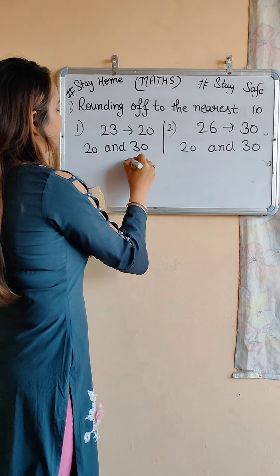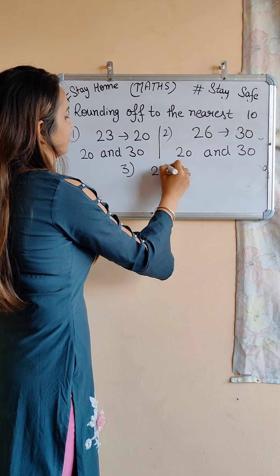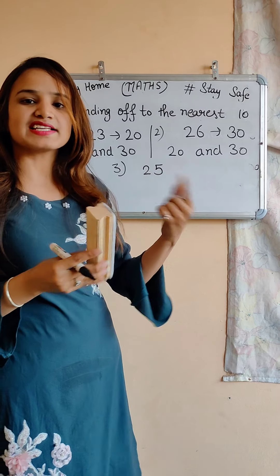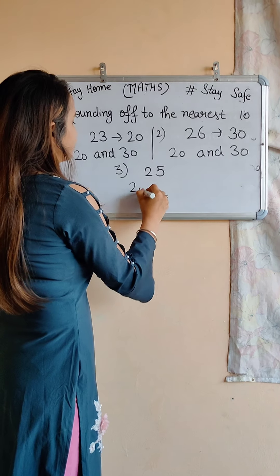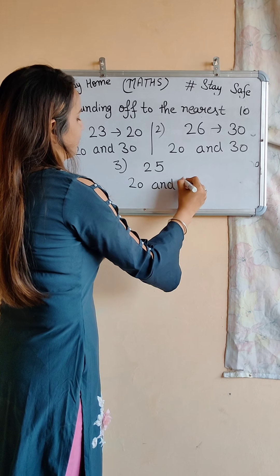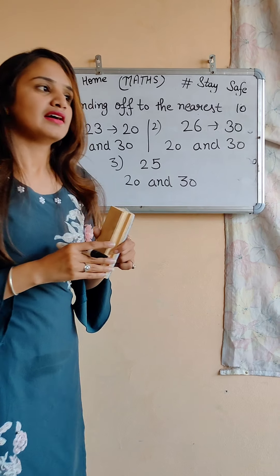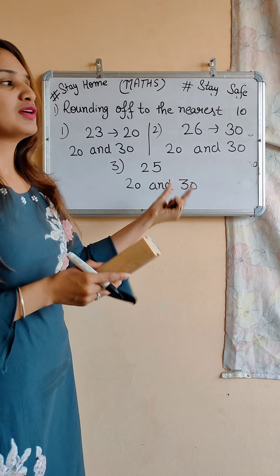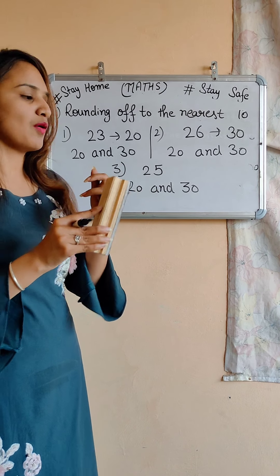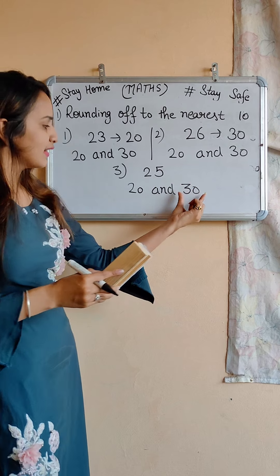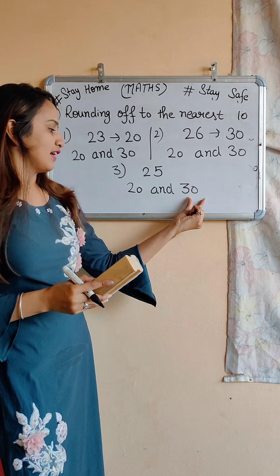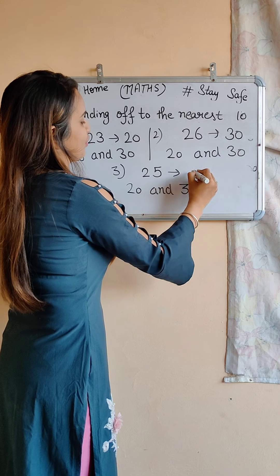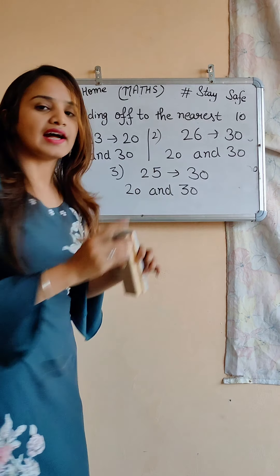The last third one is we have 25. Now, 25 lies between 20 and 30, but this is our midway term. Our midway term will always round off to the greatest 10. Here the greatest 10 is 30, so 25 always rounds off to 30.